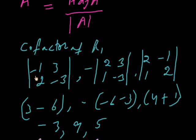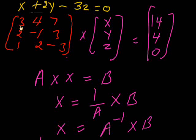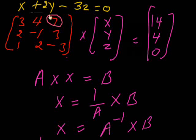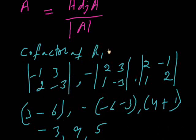For the first row's cofactors, we leave this element's row and column and take the remaining submatrix. For the second cofactor, we leave that element's row and column. For the third cofactor, we leave its row and column. I am calculating here. In the first row, the sign rule is plus, minus, plus.